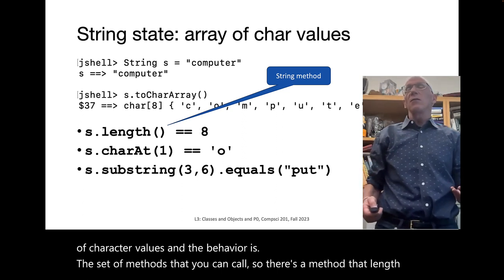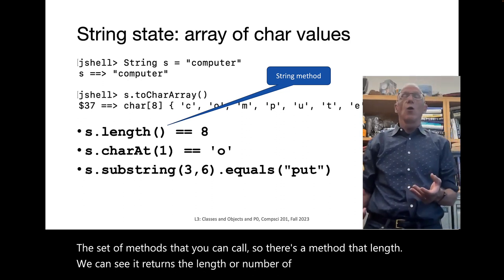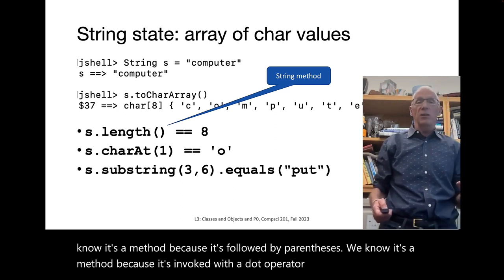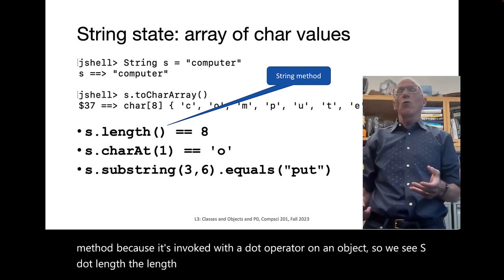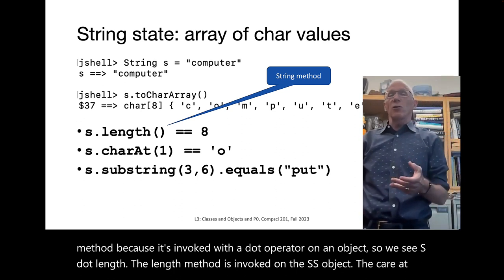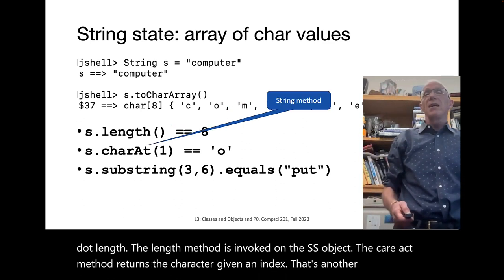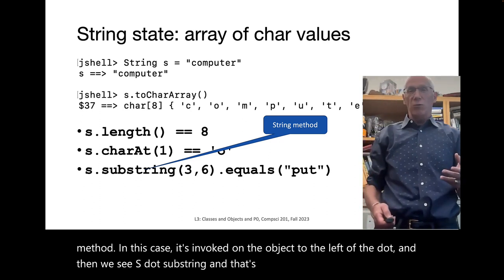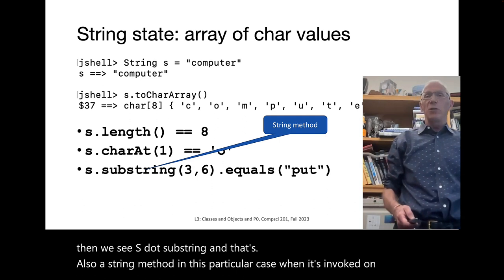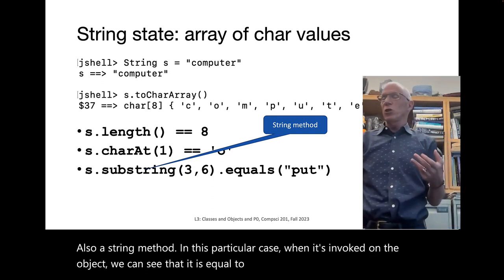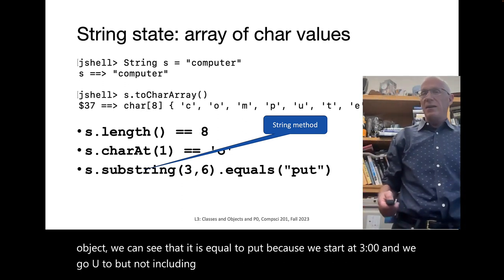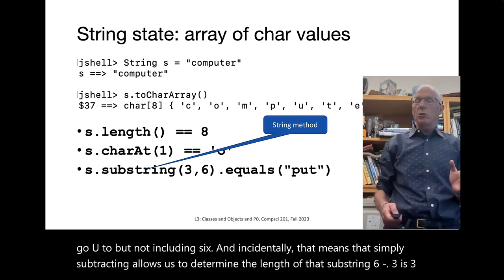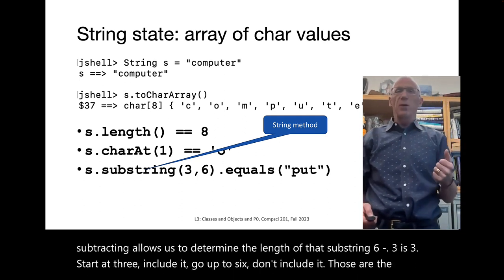For example, here we can see a string S initialized to 'computer'. By calling the method .toCharArray(), we see the internal representation. We also see three string methods. The state is this array of character values, and the behavior is the set of methods you can call. There's .length(), which returns the number of characters. We know it's a method because it's followed by parentheses and invoked with a dot operator on an object. The .charAt() method returns the character at a given index. And .substring(3, 6) equals 'put' — we start at 3 and go up to but not including 6. Subtracting gives the length: 6 minus 3 is 3.